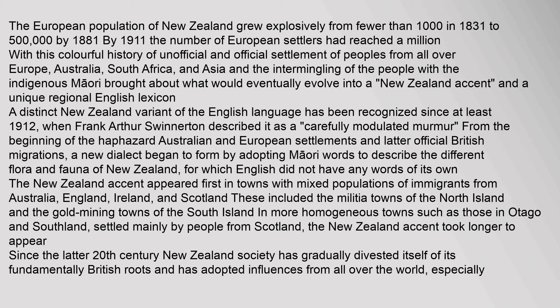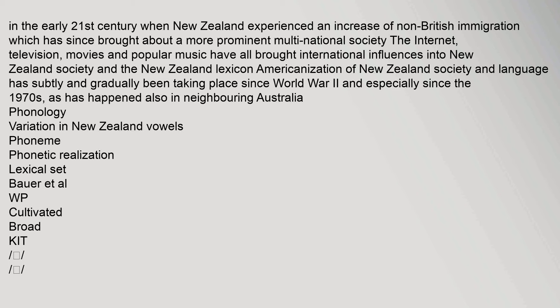From the beginning of the haphazard Australian and European settlements and later official British migrations, a new dialect began to form by adopting Māori words to describe the different flora and fauna of New Zealand. The New Zealand accent appeared first in towns with mixed populations of immigrants from Australia, England, Ireland and Scotland — including the militia towns of the North Island and gold mining towns of the South Island. Since the latter 20th century, New Zealand society has gradually divested itself of its fundamentally British roots, adopting influences from all over the world, especially with the increase in non-British immigration in the early 21st century. The internet, television, movies and popular music have all brought international influences, with Americanisation gradually taking place since World War II and especially since the 1970s.